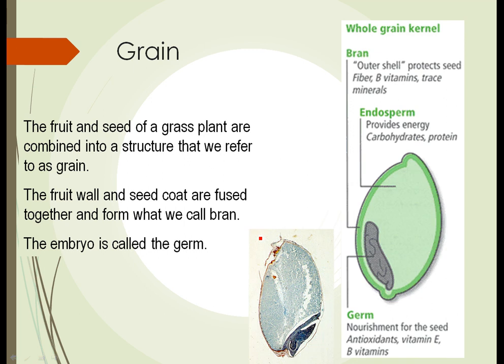The fruit and the seed of a grass plant are combined into a single structure, which we refer to as a grain. The fruit wall and the seed coat are fused together. Think of something like an apple, where the fruit wall is the outside peel and the seed coat covers the small seeds inside. In a grass plant, that whole structure is combined into one, and the fruit wall and seed coat fuse together to form a structure we call bran. The embryo inside is referred to as the germ — so wheat germ is the embryo of the wheat plant.